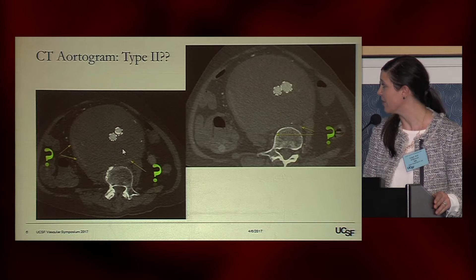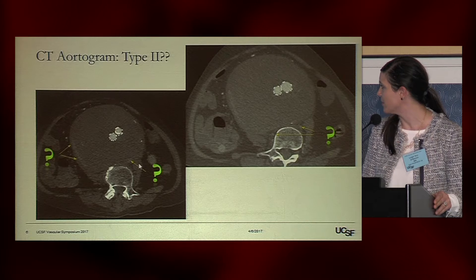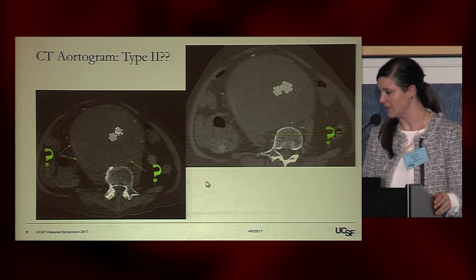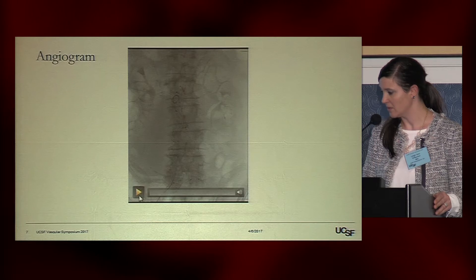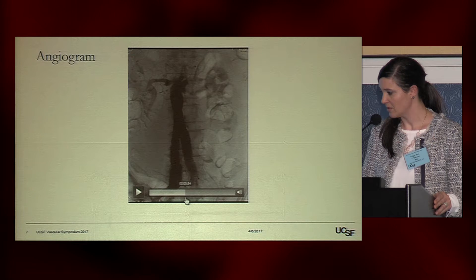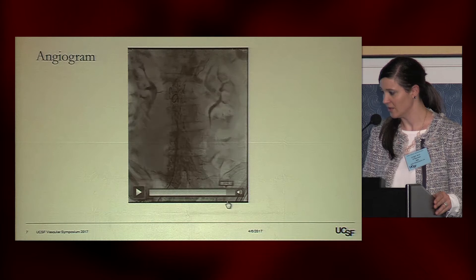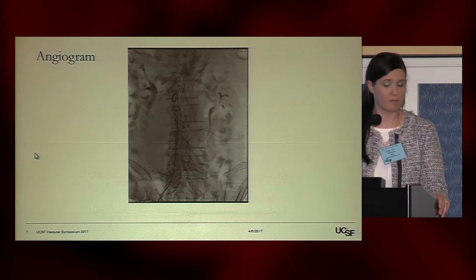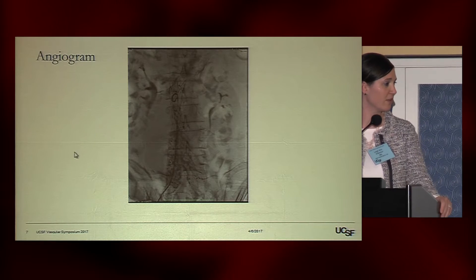The real question was: does this patient have an endoleak? His aneurysm sac is enlarging. Where is it coming from? Potentially there were some lumbars, but we couldn't really tell. Was this maybe a type 2 endoleak? We did an angiogram, which really looked pretty good and didn't show much of anything. I'd like to open it up to the panel for discussion about what to do next.